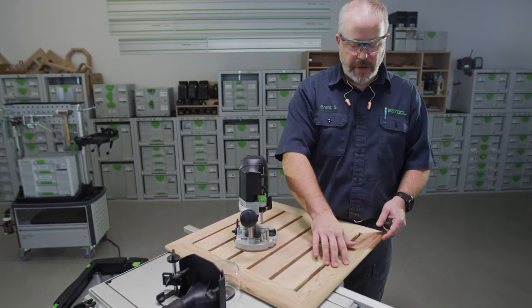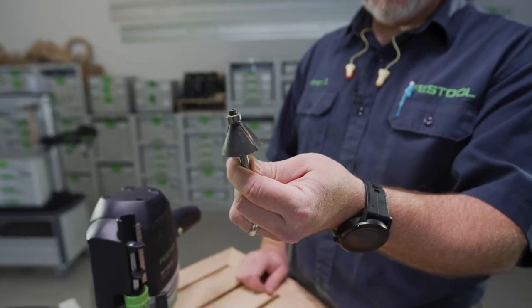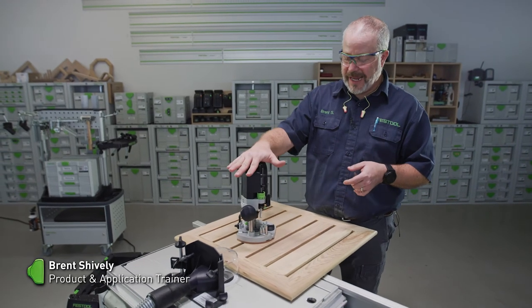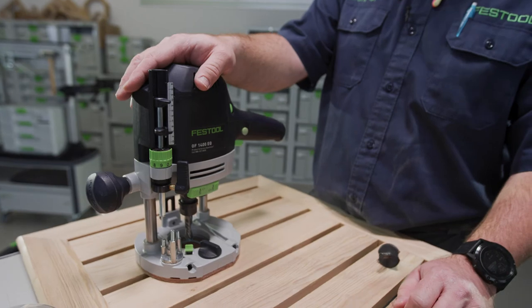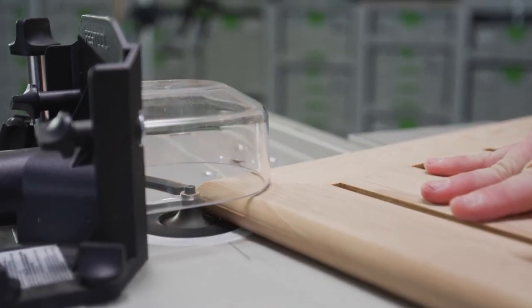So you don't have to use a round-over bit. You can also use something like a chamfer bit. There's a lot of different options, it just depends on your preference. You can also use a handheld router like our 1400 router, 2200, or a 1010 router. I prefer the CMS, it allows me to do all edges, one right after the other, in a nice fluid motion.